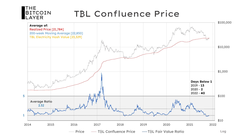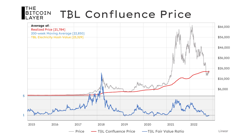If today the confluence price is around $20,000, a 2.3 ratio would mean a $46,000 price of Bitcoin. Applying the average ratio to today's TBL confluence price, Bitcoin would be just shy of about $50,000. The second thing to note is how little time Bitcoin's market price actually spends below its confluence price — a ratio below one. The answer is very little time.